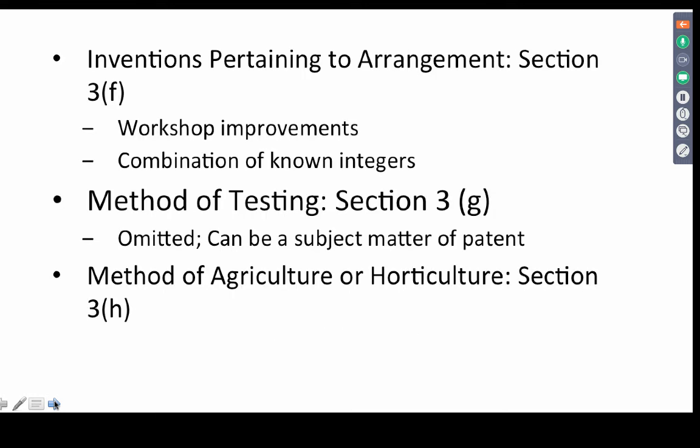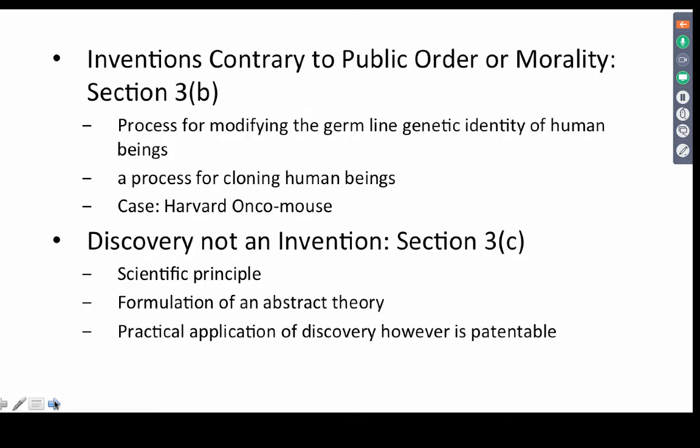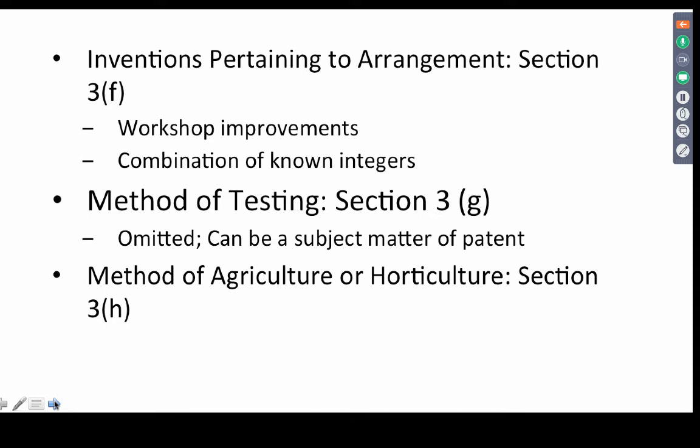Section 3(f) does not allow a person to combine known devices in a known manner. So if you want to add a timer to a machine to which a timer has not been added before, it is a mere workshop improvement — the devices are known, all you did was come up with a new arrangement of known devices. A patent will not be granted for that.